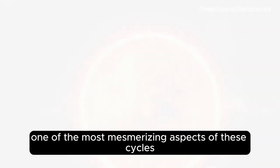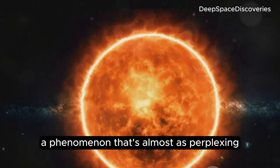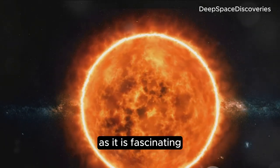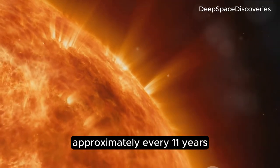One of the most mesmerizing aspects of these cycles is the Sun's magnetic field reversal, a phenomenon that's almost as perplexing as it is fascinating. The Sun's magnetic field flips its orientation approximately every 11 years.